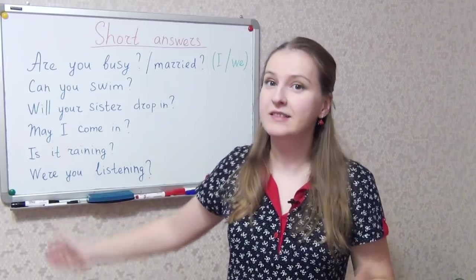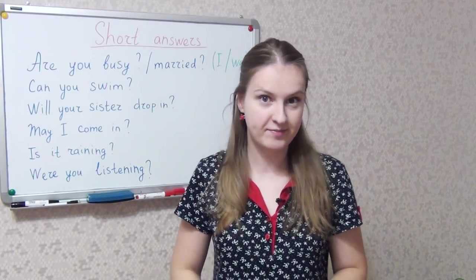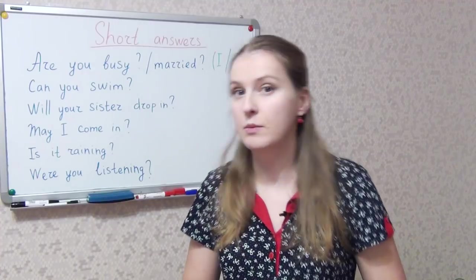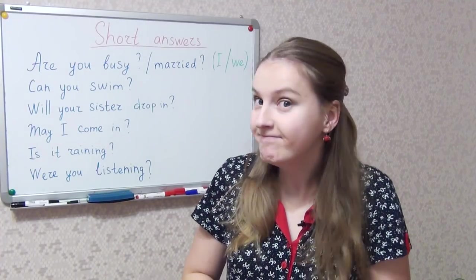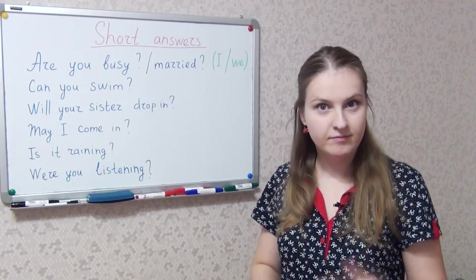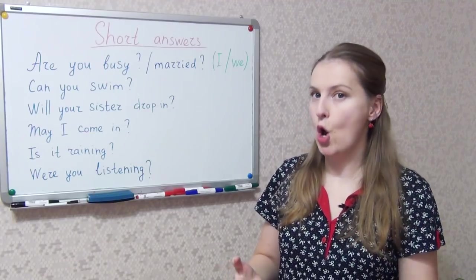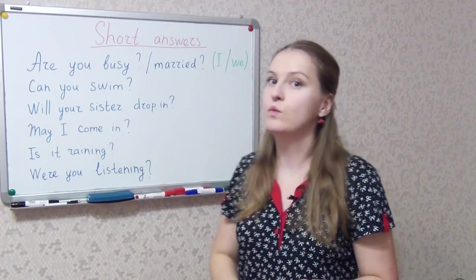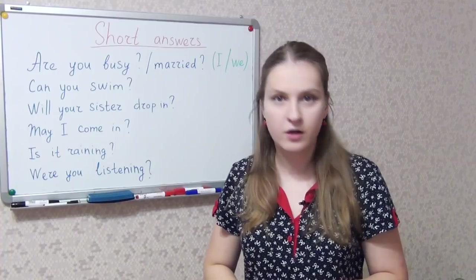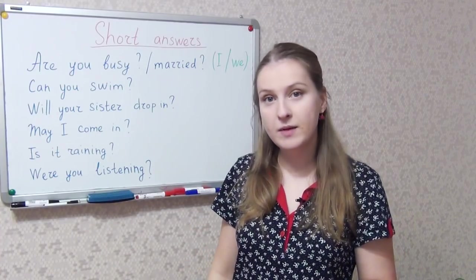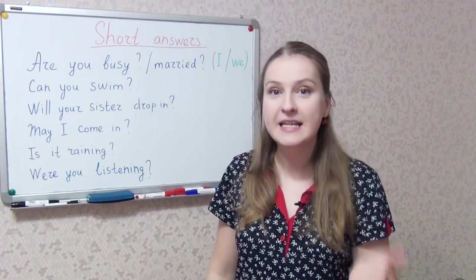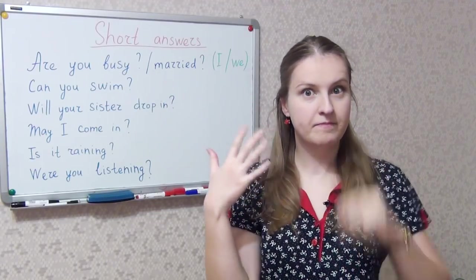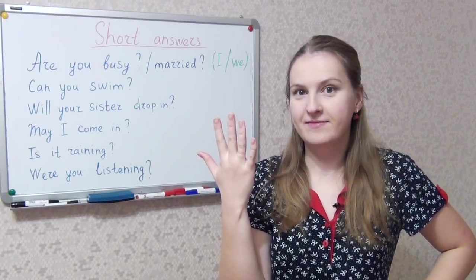Here are the questions. Try answering them both positively and negatively. By the way, notice what you have in the third position. Is it an auxiliary verb, a modal verb, or some form of the verb to be? Are you busy? Yes, I am. No, I'm not. And if you say we, you answer yes, we are or no, we aren't. So are you busy at the moment? Yes, you are, because you are studying English with me. Are you married? Yes, I am. No, I'm not. I am.